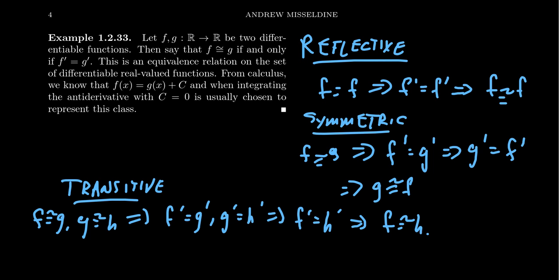Very basic arguments. This is the typical argument one does here. You just have to show all three properties to demonstrate that you have an equivalence relationship.